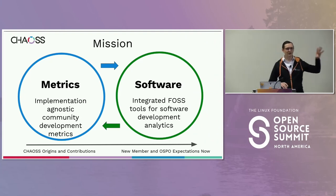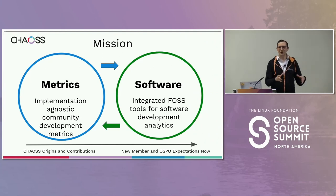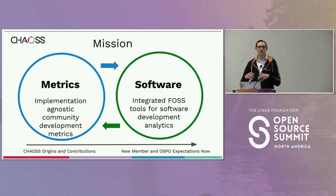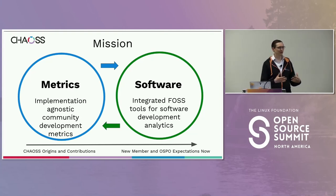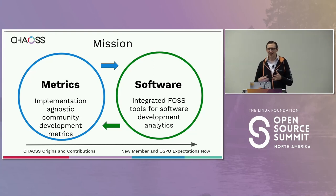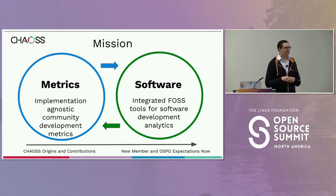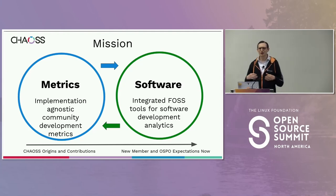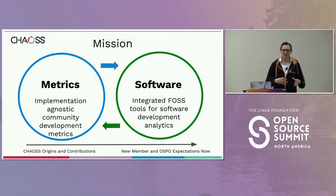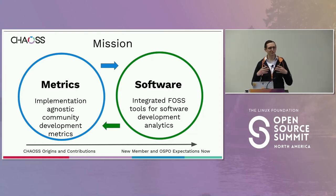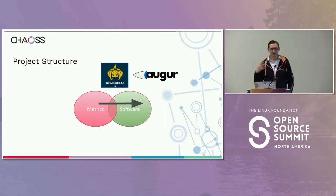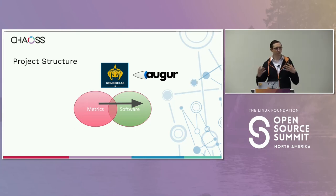We created CHAOSS to have standard metrics — a common language around what we're actually measuring so we can all talk together and compare notes. Before CHAOSS, everyone was looking at the same metrics but calling them something different. Do we count an empty commit? A merge commit? There are a lot of questions. We're building software that actually does this and informs our standards. We have two projects: GrimoireLab and Augur — they take different approaches, so there's some choice.